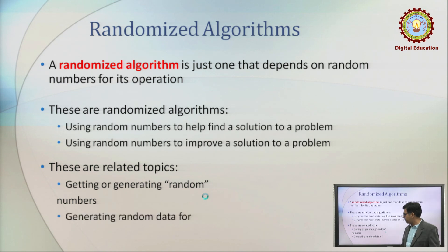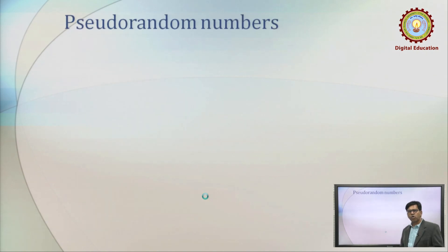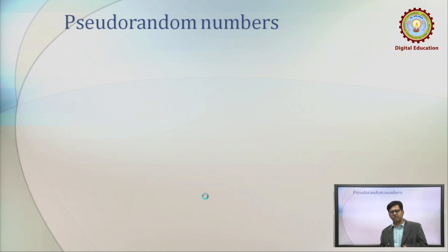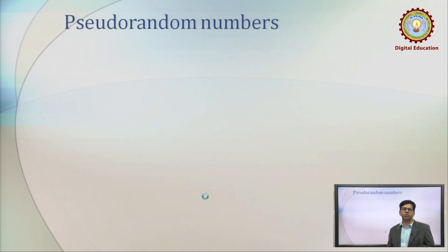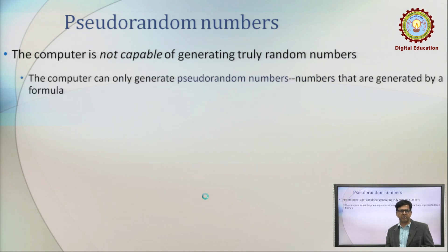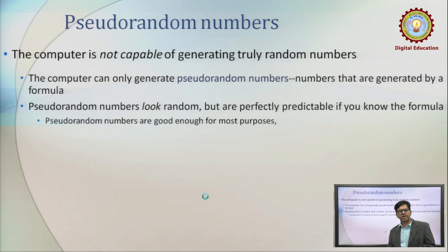The topics related to randomized algorithms include getting or generating a random number and generating random data for testing purposes. Now, how do we get these random numbers? It is very clear that randomized algorithms depend on some random numbers and random information. Generally, computers do not produce pure random numbers — they generate pseudo-random numbers, and these pseudo-random numbers are generated by different algorithms.